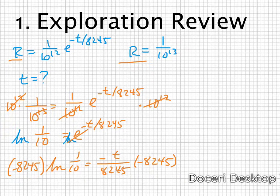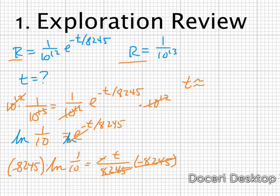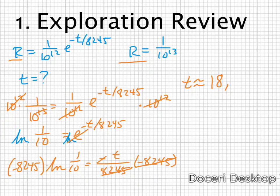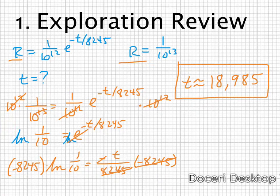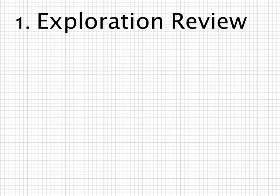Now that e is isolated, I take the natural log of both sides. The e and natural log cancel, leaving negative t divided by 8,245 equal to the natural log of 1 over 10. To get a positive t, I multiply both sides by negative 8,245. Putting this in the calculator — natural log of one-tenth times negative 8,245 — gives approximately 18,985 years. That's how old the fossil is. That's your exploration review.